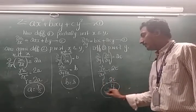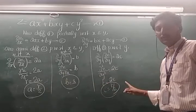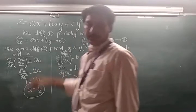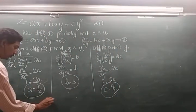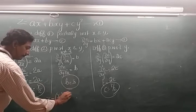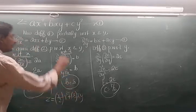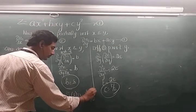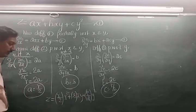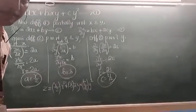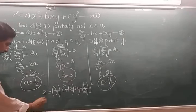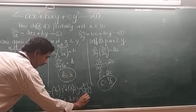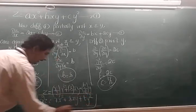Now we have a = r/2, b = s, and c = t/2. Substituting these into equation number 1: z = (r/2)x² + s·xy + (t/2)y². Taking 2 as the LCM and cross-multiplying, we get the required PDE: 2z = rx² + sxy + ty².